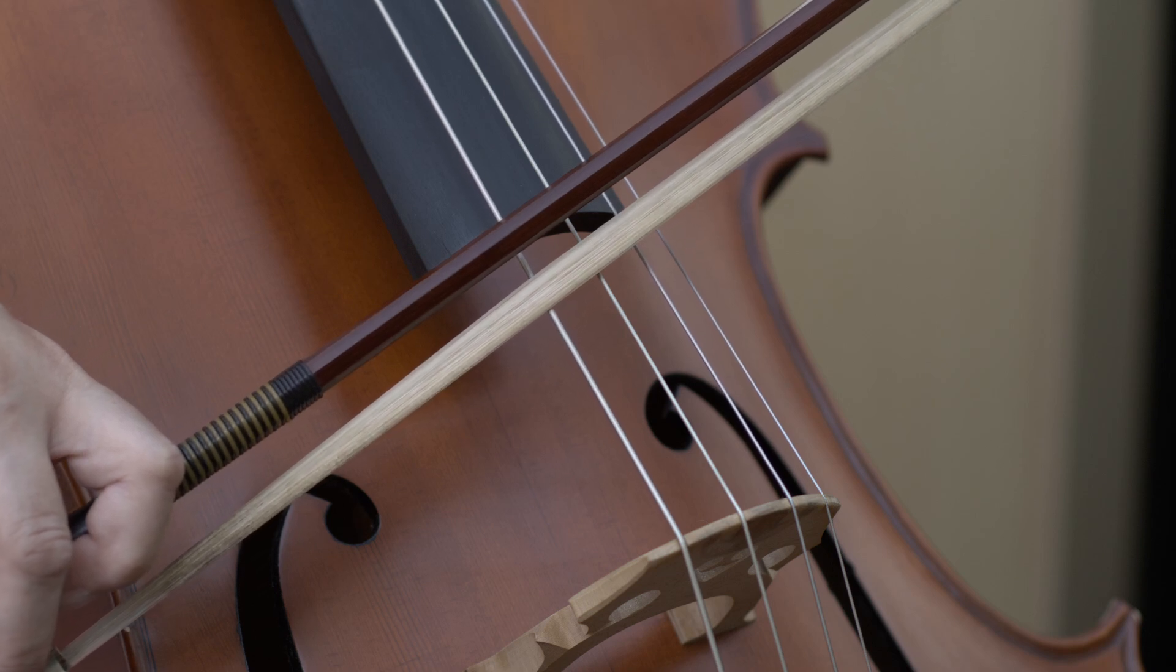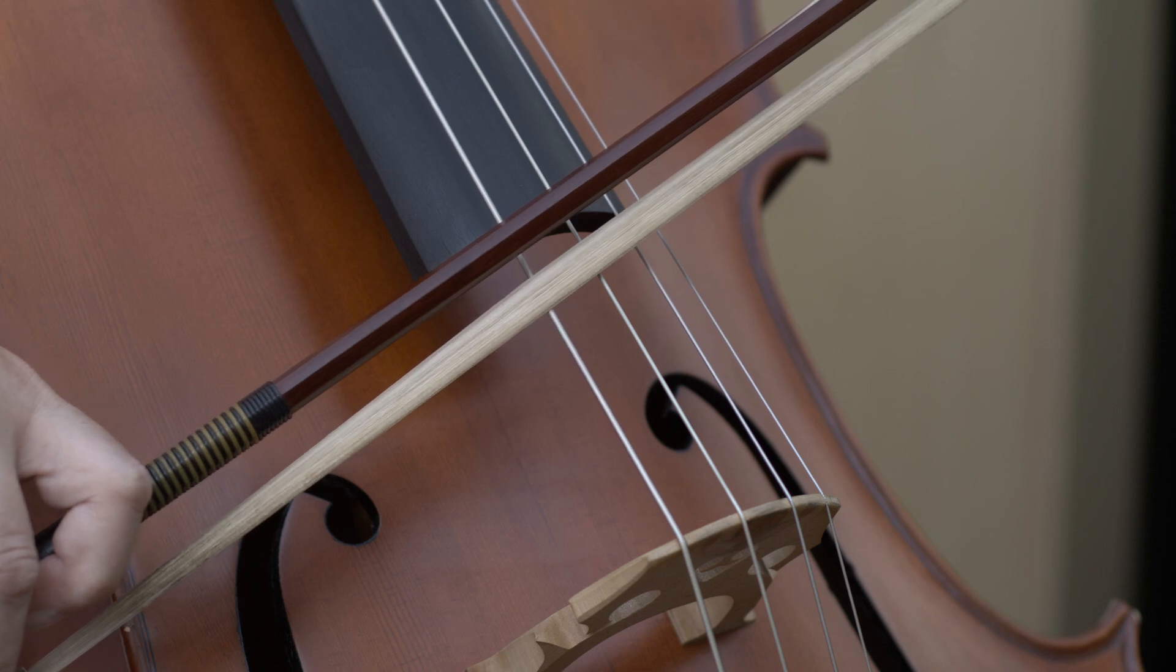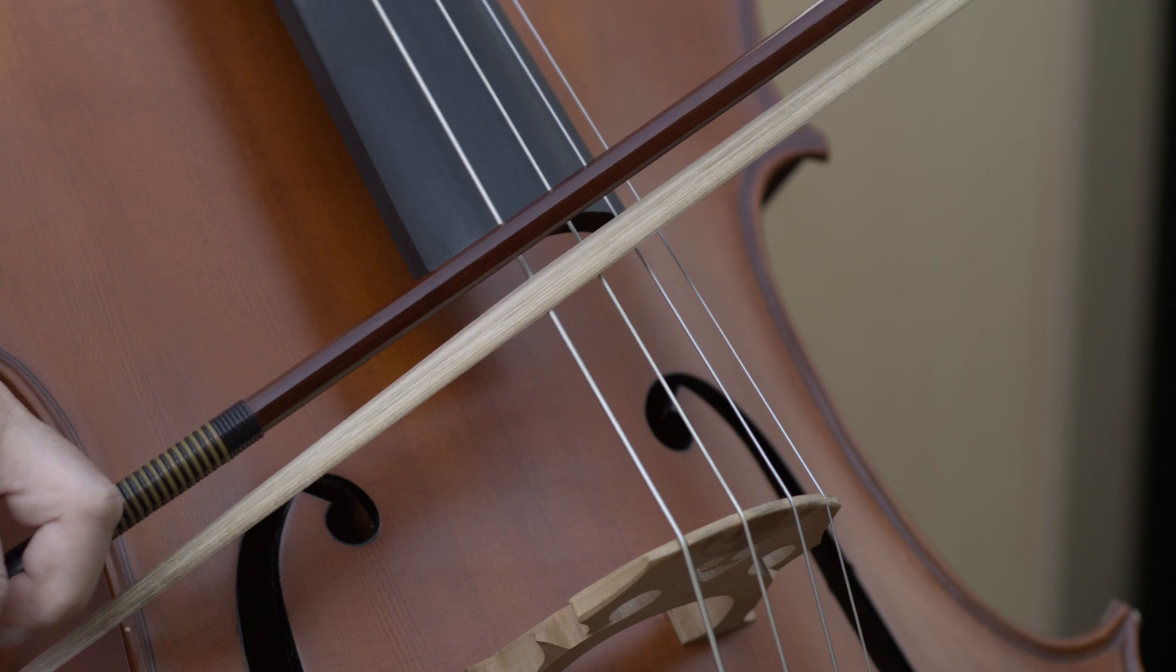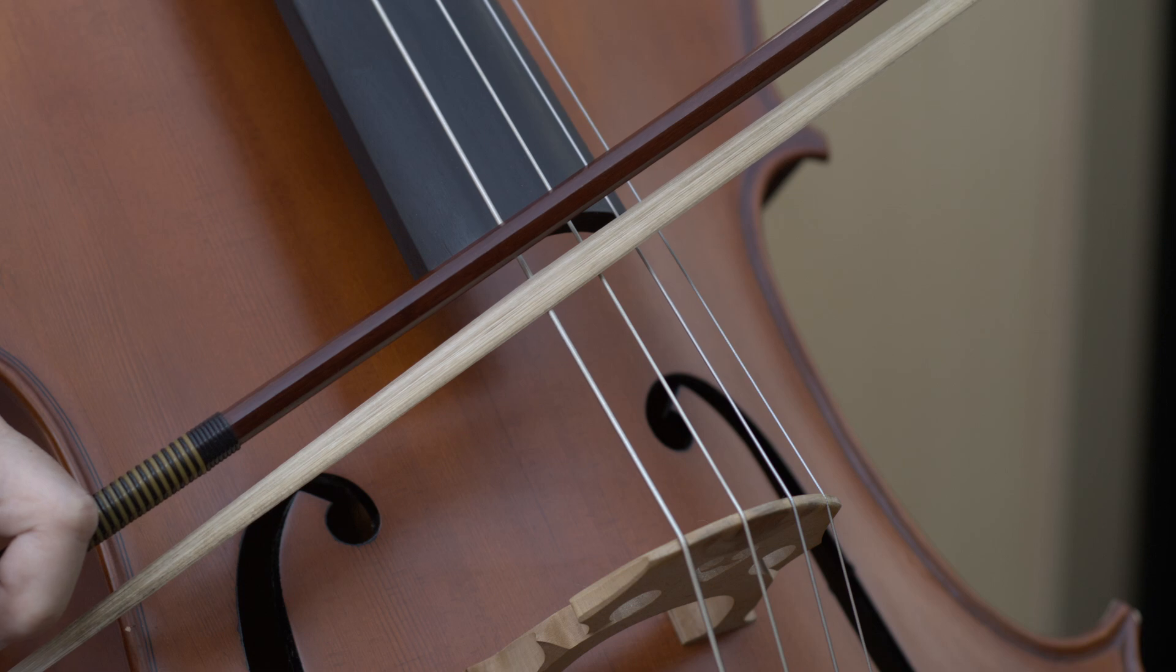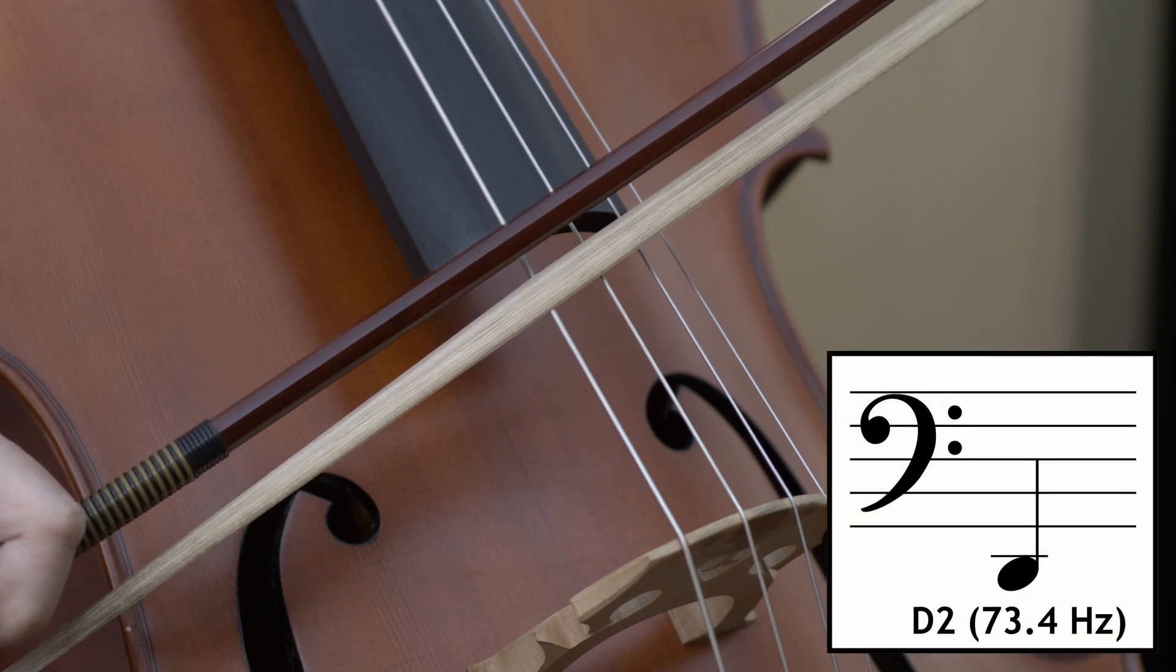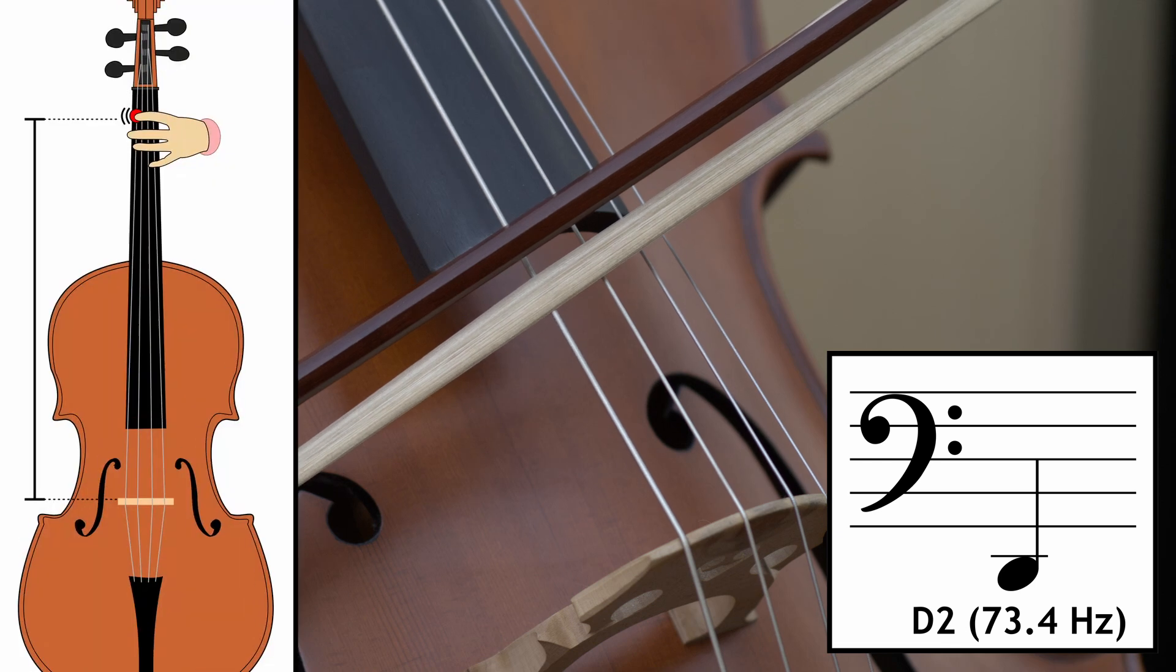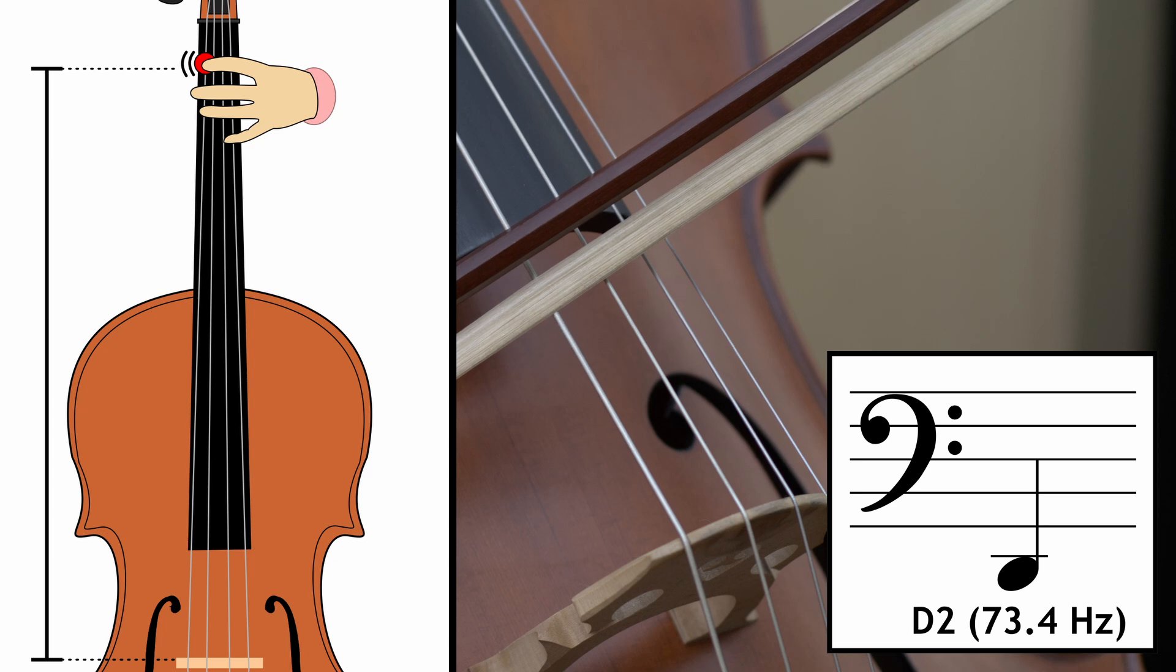The first example you are currently seeing on the screen is the low D being played on the cello. The pitch you can hear, which I recorded separately, is the sound that this note makes and is often referred to as D2 or first finger on the low C string for a cellist, or the frequency of 73.4 Hz.